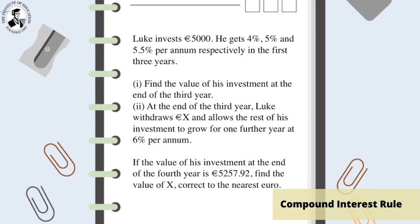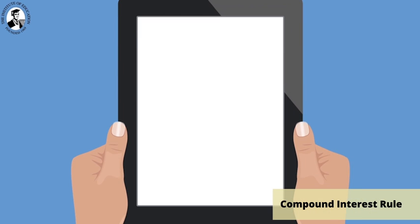Part 2: At the end of the third year, Luke withdraws X euro and allows the rest of his investment to grow for one further year at 6% per annum. If the value of his investment at the end of the fourth year is 5,257.92 euro, find the value of X, correct to the nearest euro. First, we'll do part 1.